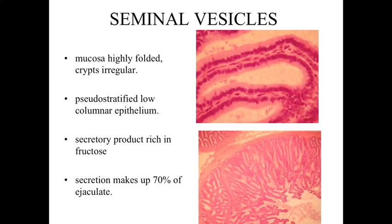The first accessory structure is the seminal vesicles. If we take a look at the seminal vesicles, we're going to see an epithelial lining which is lined by a pseudostratified low-columnar epithelium. It may look slightly simple columnar, but in many regions you're going to see the nuclei staggered up and down, giving an appearance that it may look stratified. Keep in mind that all of the cells are sitting upon the basement membrane. At lower magnification, we can see that the mucosa is highly folded, with crypts and gland-like structures giving it an irregular appearance.